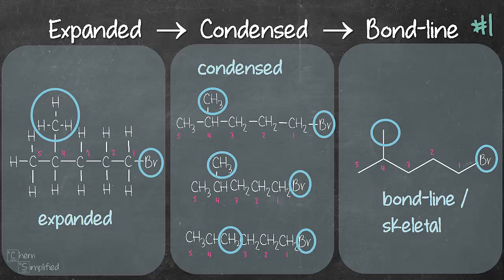So every point in our skeletal structure represents a carbon and the corresponding number of hydrogens. So we know that carbon forms four bonds. So for example if we look at our first carbon in the skeletal structure there are two bonds. One to bromine and one to carbon number two. So from that structure we know that carbon one should have two hydrogens. And if we refer to the expanded or the condensed form we can see that carbon number one has two hydrogens.